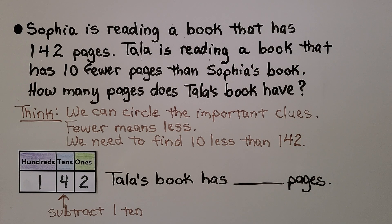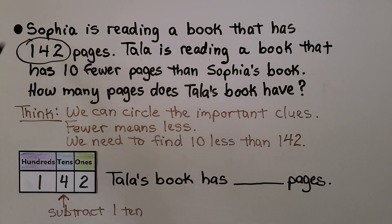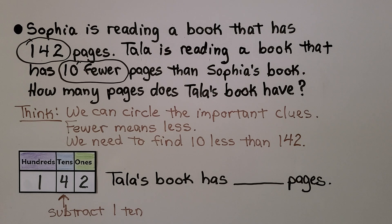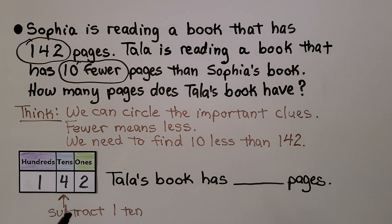Here we have a word problem. Sophia is reading a book that has 142 pages. Tala is reading a book that has 10 fewer pages than Sophia's book. How many pages does Tala's book have? We circle the important clues: Sophia's has 142 pages, and Tala's has 10 fewer. Fewer means less, so we need to find 10 less than 142. We have 1 in the hundreds place, 4 in the tens place, and 2 in the ones place. 10 less, we subtract 1 ten. If you said 132 pages, you're right.